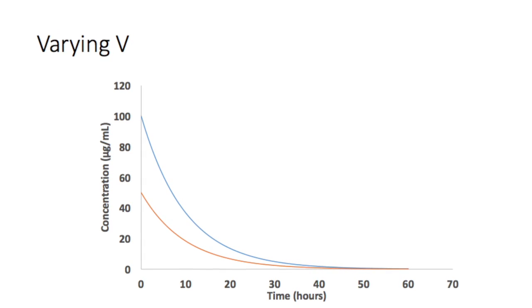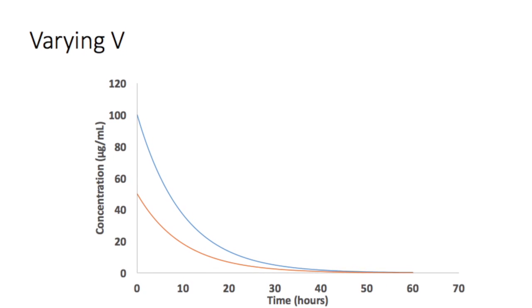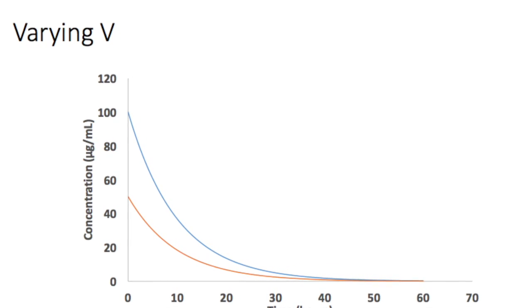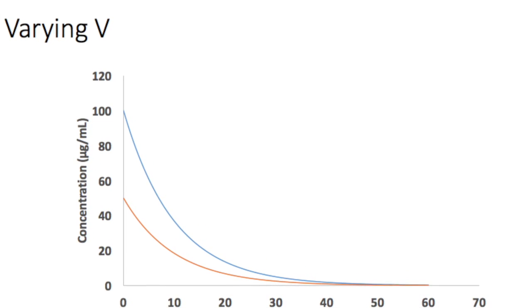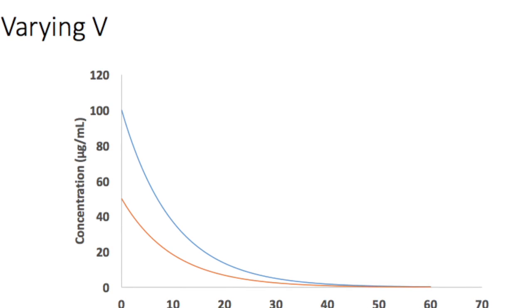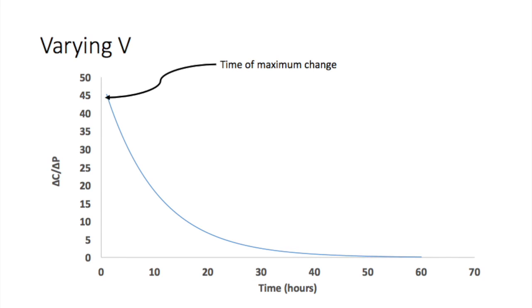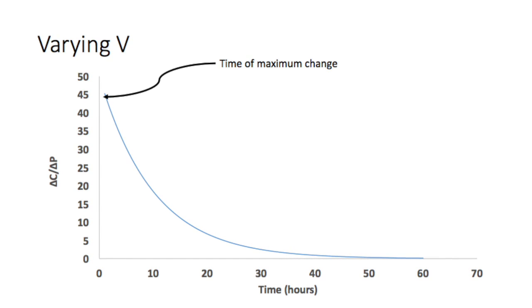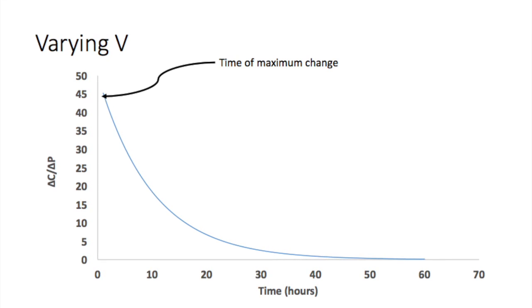And then you repeat the process, this time varying the volume of distribution so that you get two profiles that look like this. And then when you plot the ratio of the difference versus time, you get this graph which shows you that the earlier you can take a sample, the more information you're going to have to estimate the value of the volume of distribution.